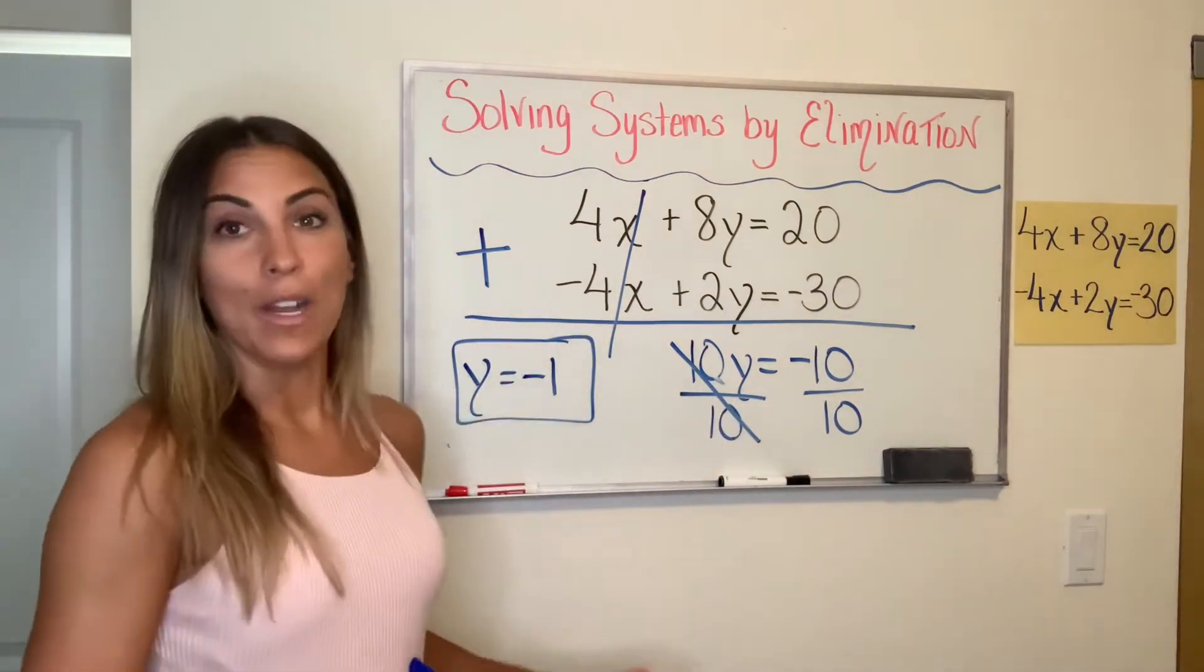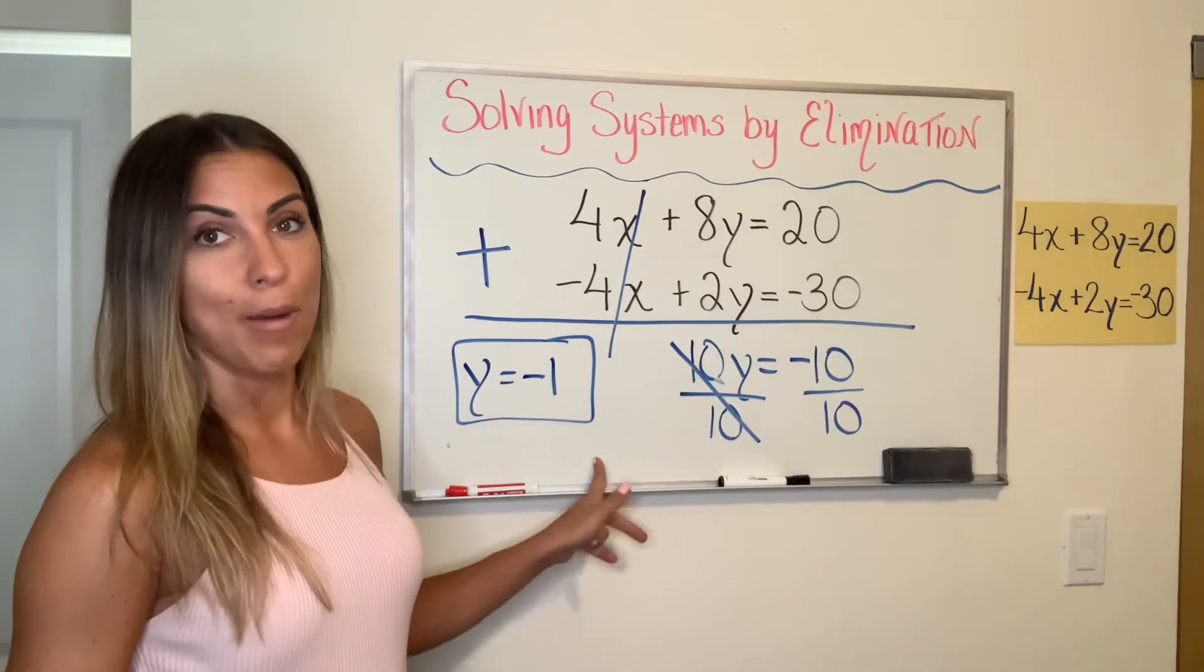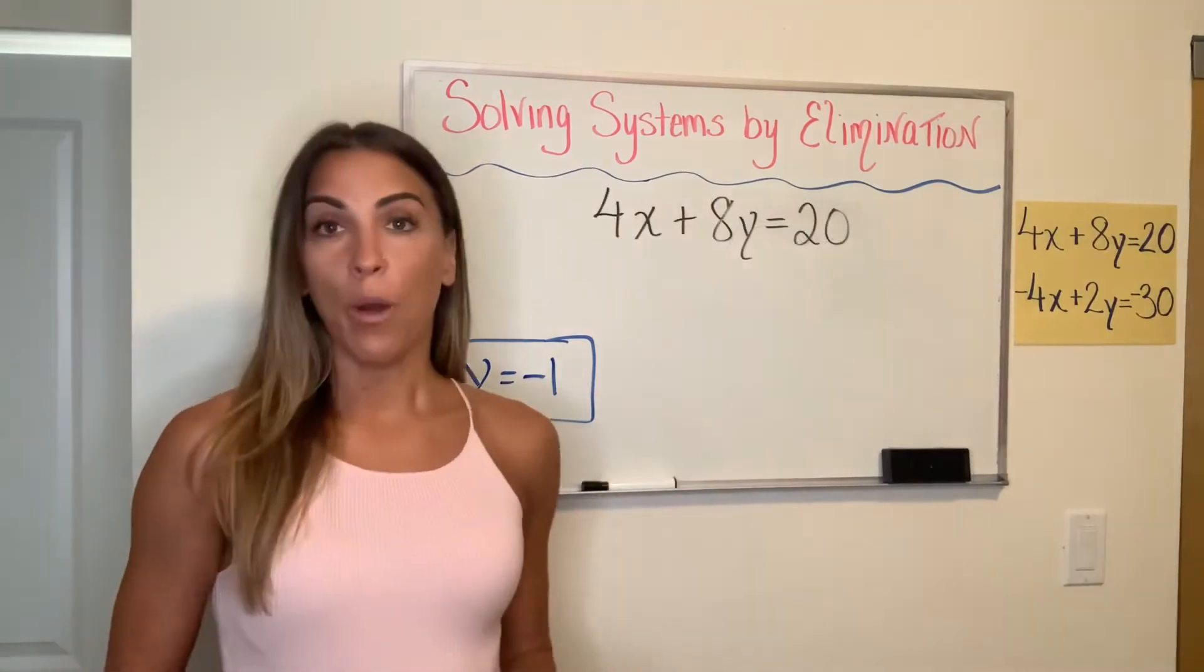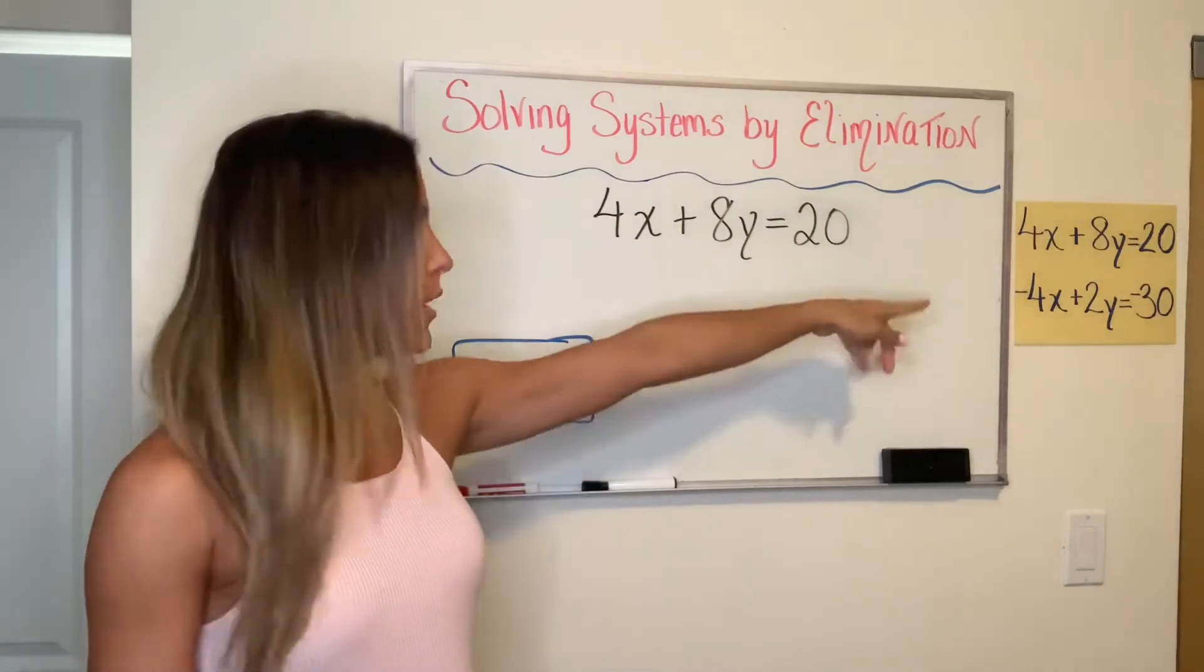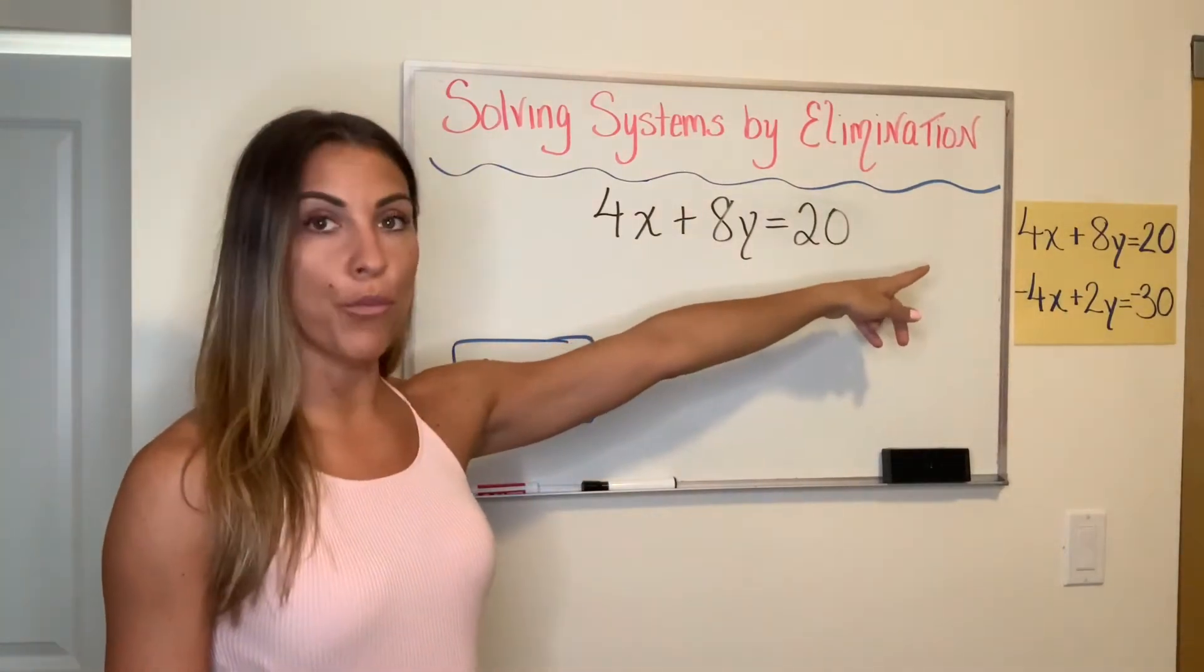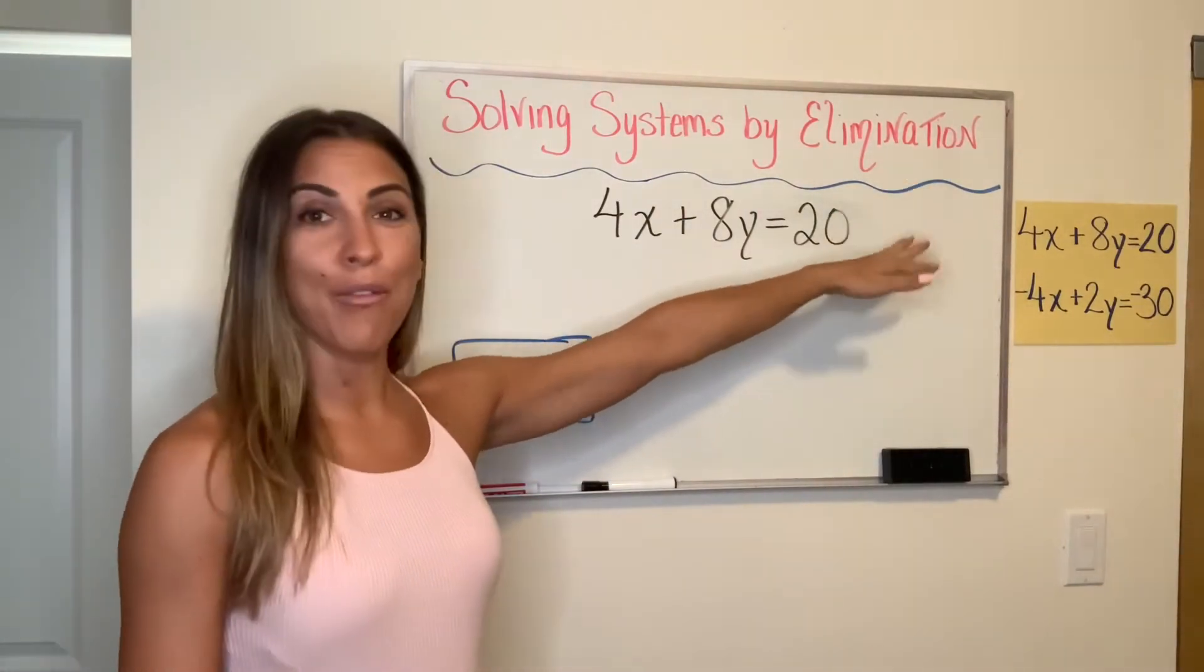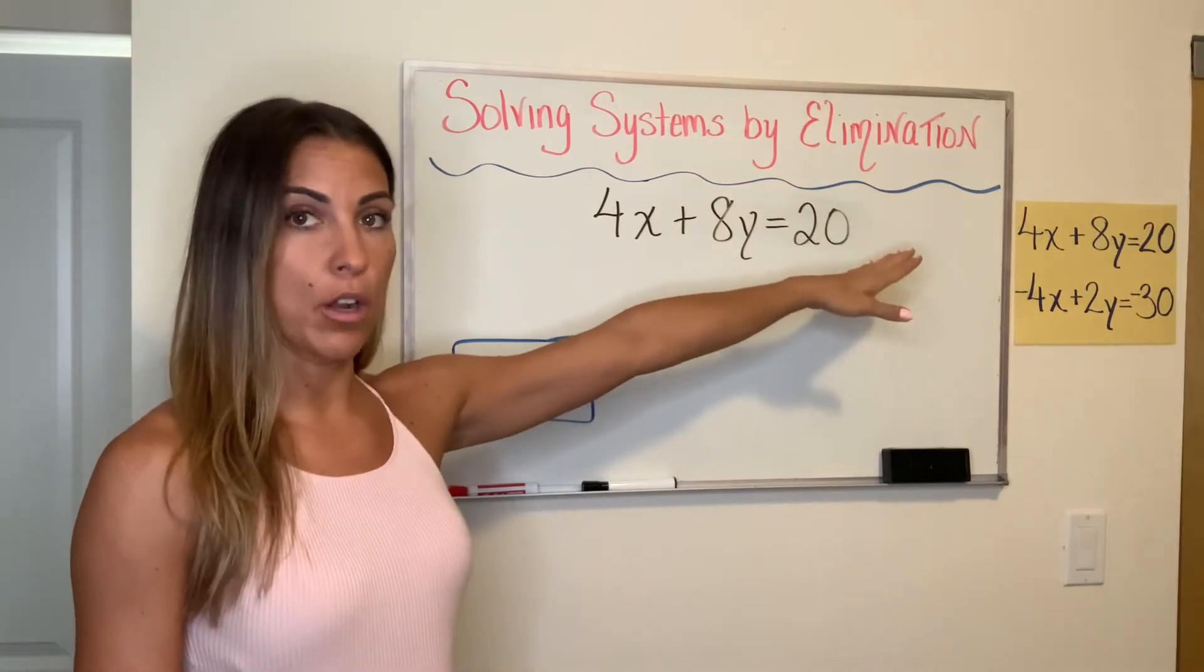So now what I've done is I've rewritten one of my equations from my system. So you can see the original system on the yellow paper over there. You can choose whichever equation you want for this part of the solving.